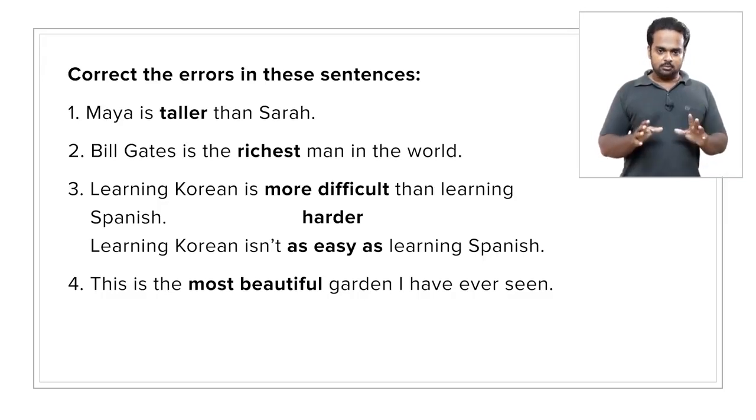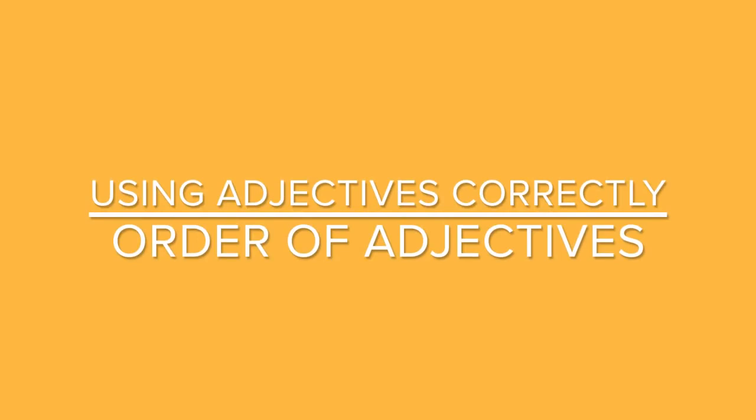Alright, so remember not to make any of these mistakes. Let's now move on and look at the third and final area where students commonly make mistakes with adjectives, and that is the order of adjectives. What do I mean by order of adjectives? Well, in English, when you have more than one adjective describing a noun, there's usually a fixed order in which to put those adjectives, and the mistake students often make is putting adjectives in the wrong order.